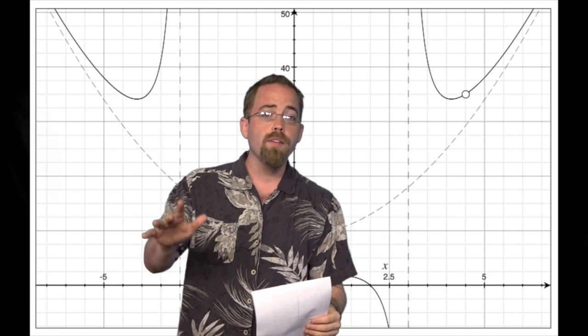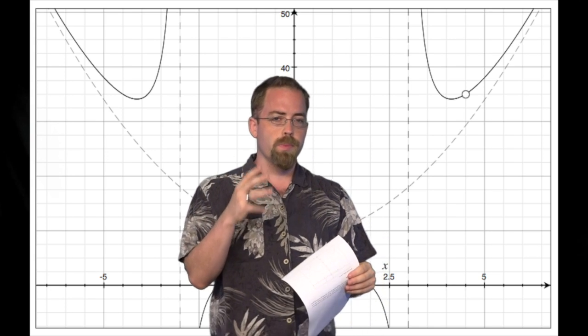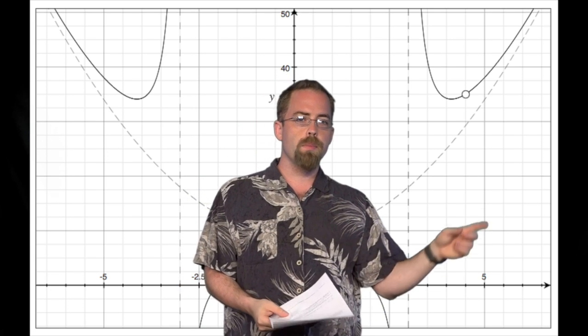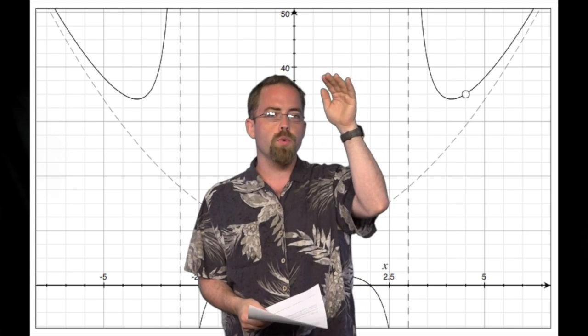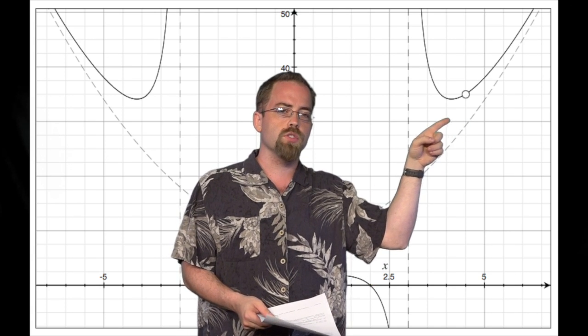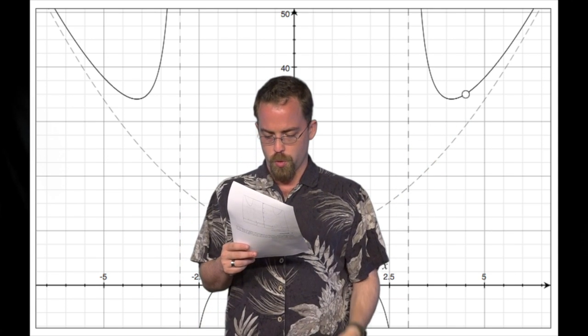Obviously, the x minus 4 is going to cancel, and that's going to make this hole that you're seeing right here. The x minus 4 in the numerator and denominator cancel and they make a hole when x equals 4.